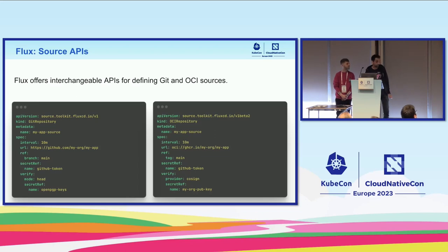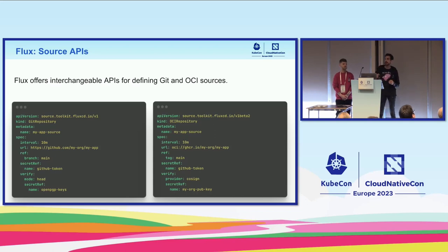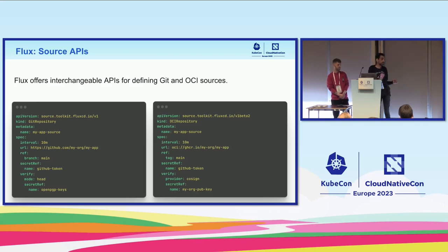How can you do that today with Flux? Flux has a bunch of APIs under the source controller where you define the sources Flux should look at. The most popular thing everybody's doing right now is defining a Git repository with a URL — it can be HTTPS or SSH — you give it a secret, maybe a token or SSH key. If you want to verify the authenticity of what you're applying on a cluster, for example to protect production and say only these people with these keys are authorized to make changes, with Git and Flux today you'll be using OpenPGP — everybody has to sign commits, and on the server side Flux has the public keys of the people allowed to do that.